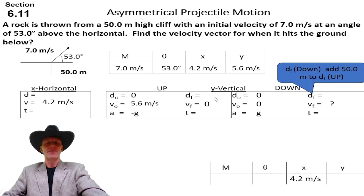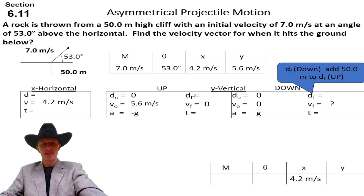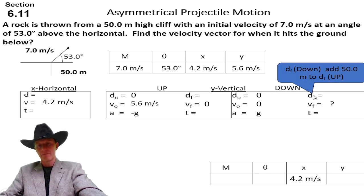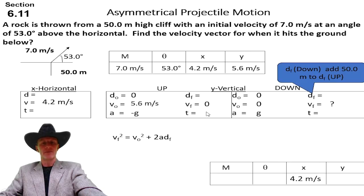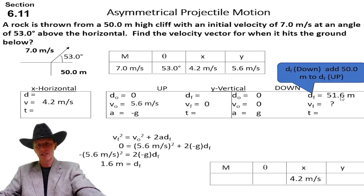We have to get that d_f in the up, add 50 to it. Remember that vertical difference between two levels. It's added to this d_f to get to this d_f. We need this d_f. With the third equation, we can get it to be 1.6. Add it to 50. We get 51.6.